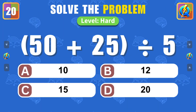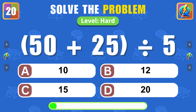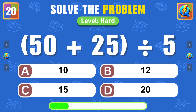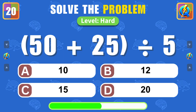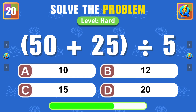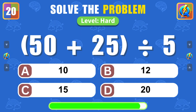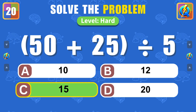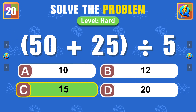What is the result of 50 plus 25 divided by 5? Spot on, the answer is 15.